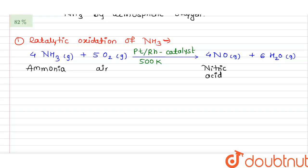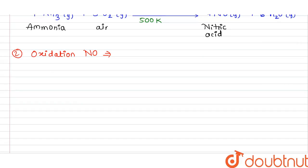The second step is the oxidation of nitric oxide. The nitric oxide (NO) obtained in step one is now oxidized. The reaction involves 2 NO in gaseous form.